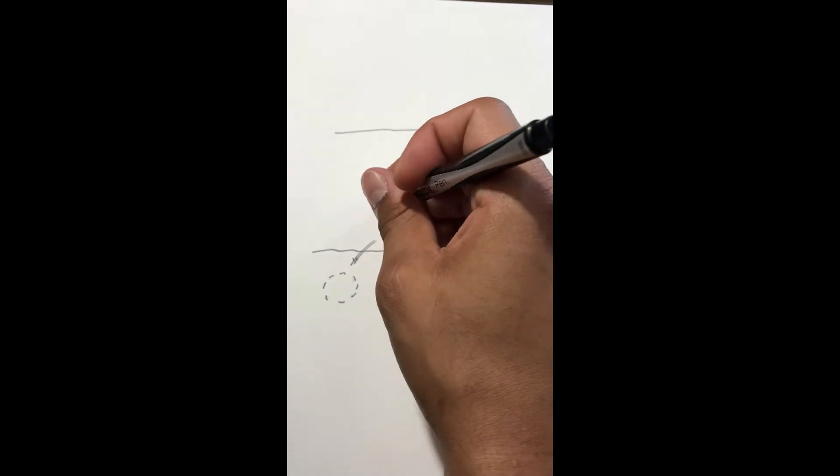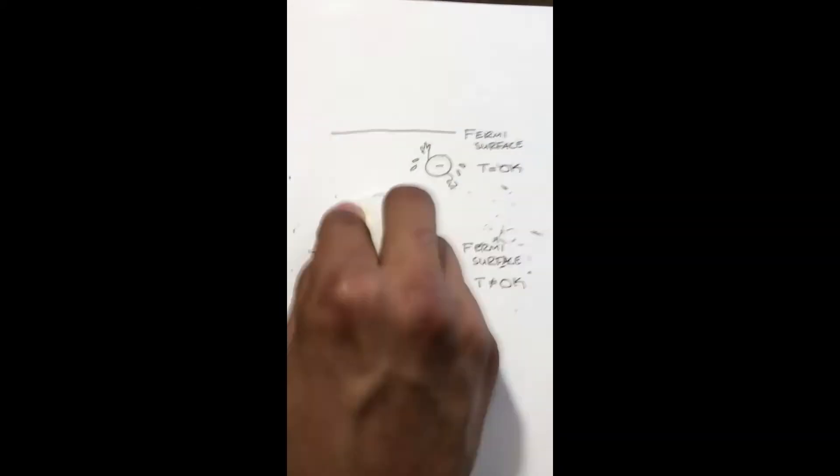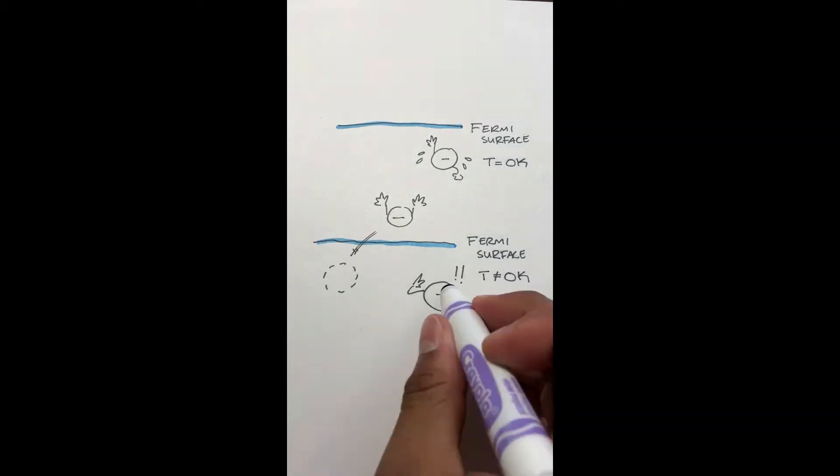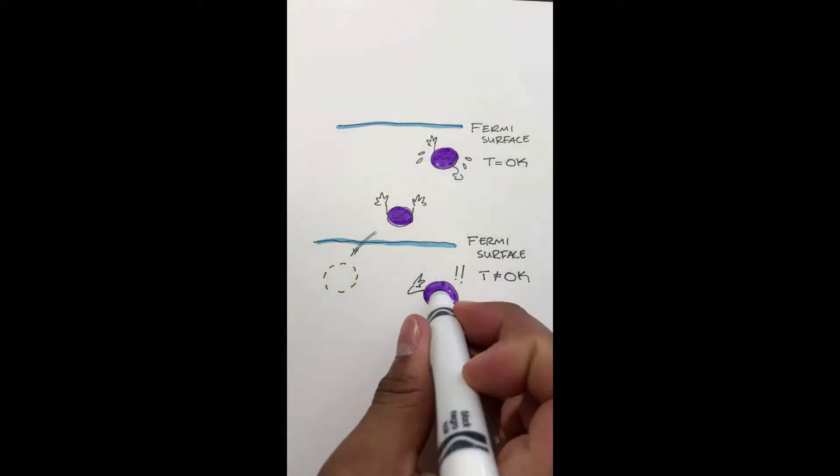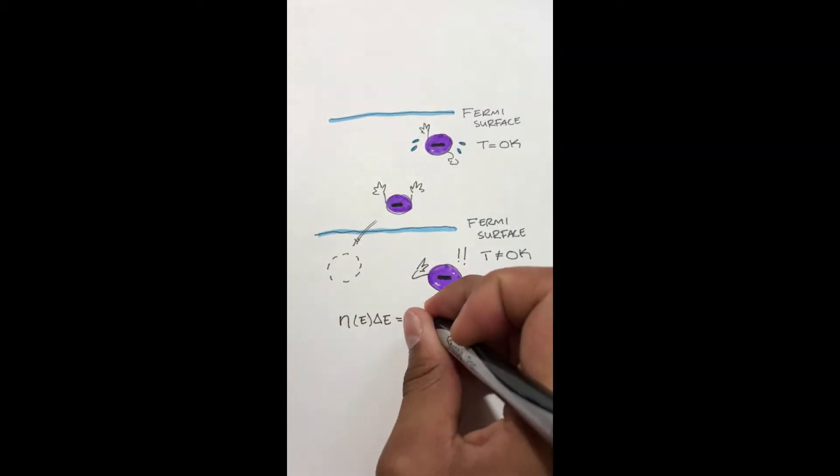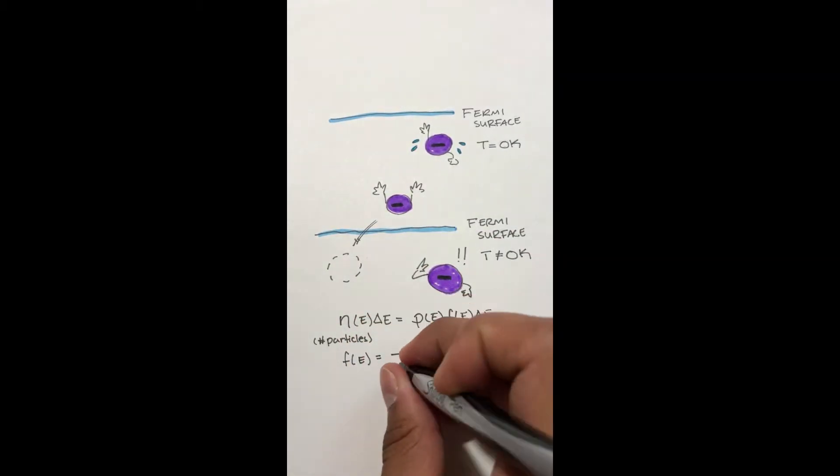Furthermore a Fermi level is characterized as the surface that electrons cannot cross at absolute zero temperature. At certain temperatures or excitations electrons are able to have an energy above the Fermi level and enter the conduction band where they can create a small current. The number of electrons that can reach the conduction band will depend on the Fermi function and the number of available energy states.